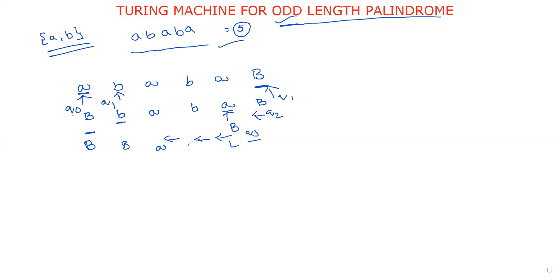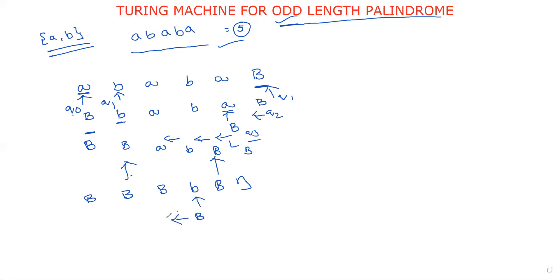Moving up to the first blank symbol position, then again move to the left side. The moving process goes up to this position: B B, and then 'a' is replaced with a blank symbol. Again B B B B — if the immediate previous one is also a blank symbol, then we stop the process. This is the basic procedure. I will now design the Turing machine and explain the instantaneous description clearly.